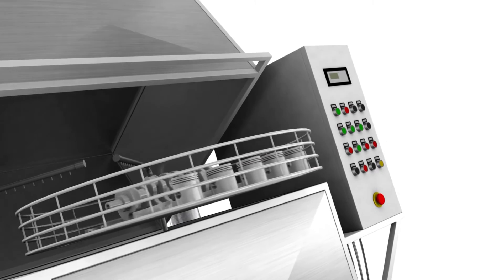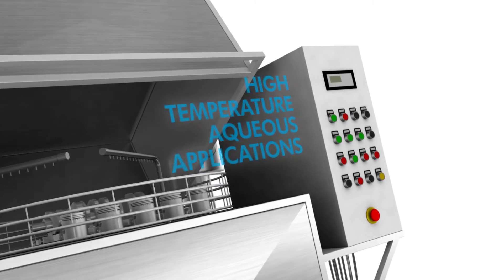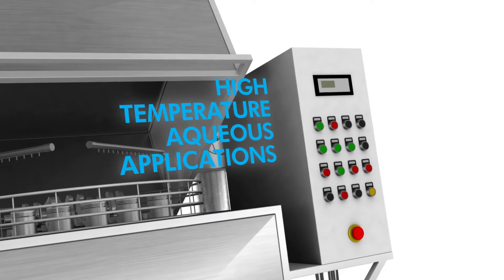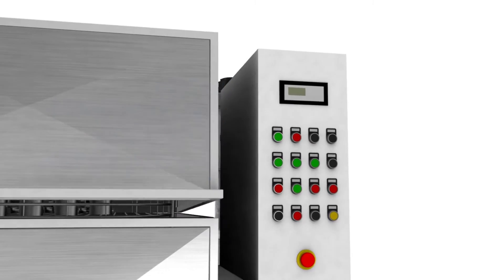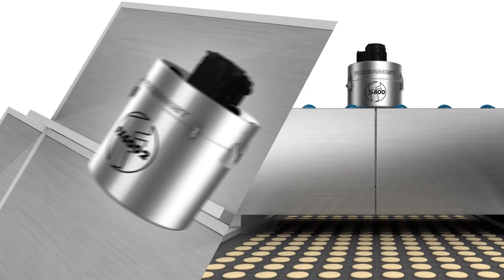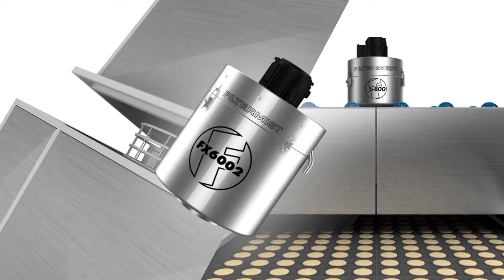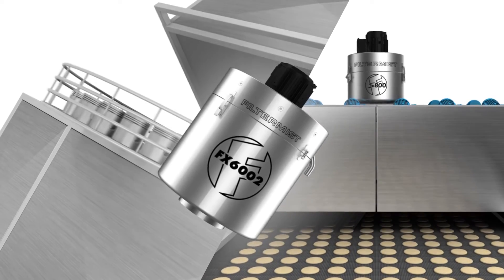Filter Mist units are also ideal for collecting and removing steam generated in high temperature aqueous applications such as parts washing. Water droplets and the dirt and detergent contained within can be dangerous to health as well as damage machinery if not removed effectively. Filter Mist offers a stainless steel unit specifically for use in parts washing and food production applications.